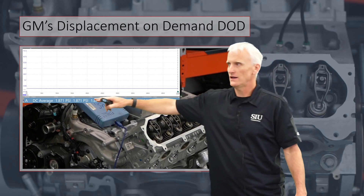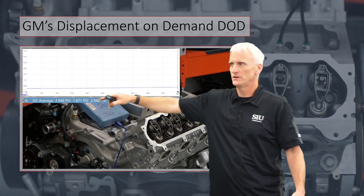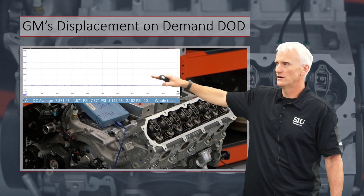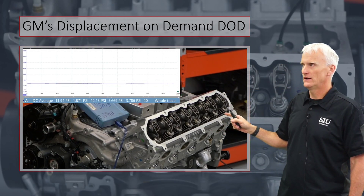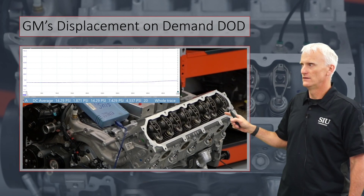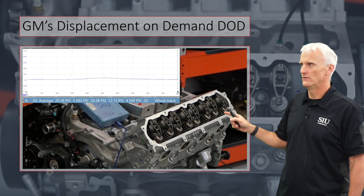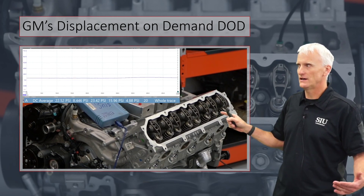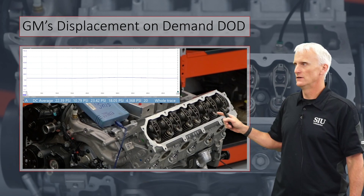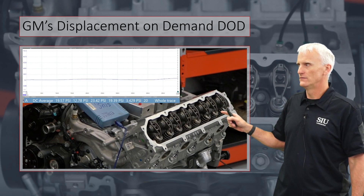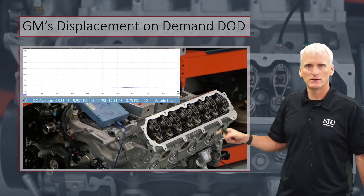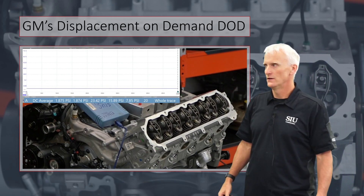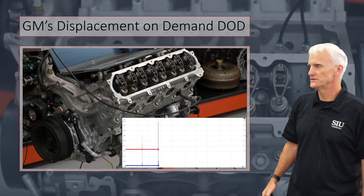I'm just pulsing it with an air gun. What pressures do they operate at? I've got about 2 PSI sitting there, and as I raise the pressure up, you're going to see when it gets to about 20 PSI they deactivate. So they need 20 PSI to release that lifter. And when I lower it back down, they both start working again at about 15 PSI or so — there's a little bit of hysteresis.